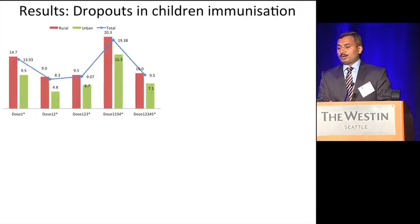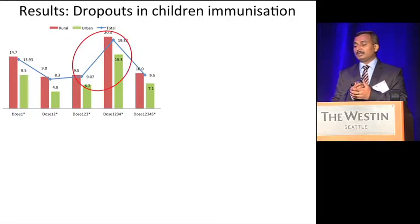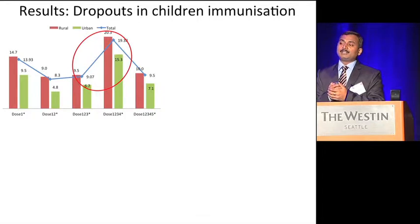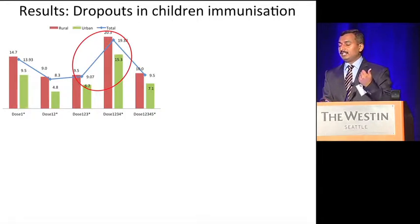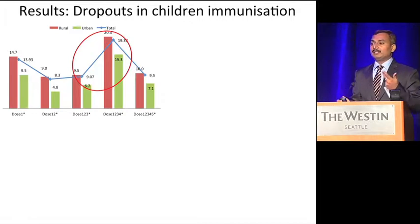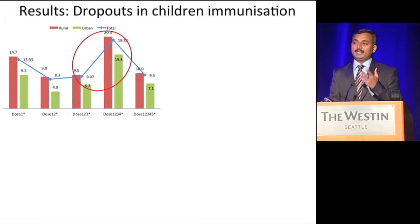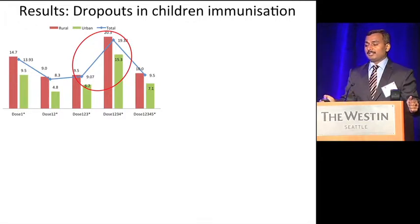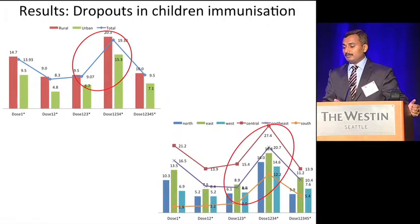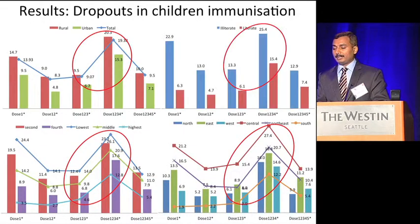Regarding dropout: children who received BCG, DPT-1, Polio-1, DPT-2, and Polio-2 (Dose 1-2-3), but who did not complete Dose 1-2-3-4 (which adds DPT-3 and Polio-3), represent the largest gap. This gap is consistent across all background characteristics of the women.